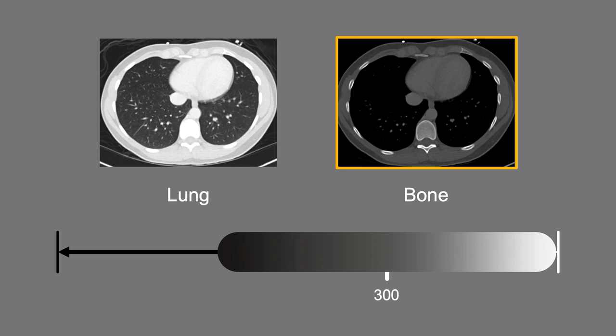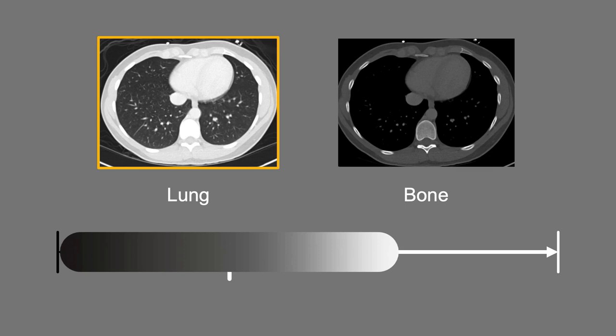When viewing the lungs, the center point must be quite low, around negative 500, because you want the center of your grayscale values to optimize your ability to see air-filled structures. Remember, pure air is negative 1000 Hounsfield units by convention.